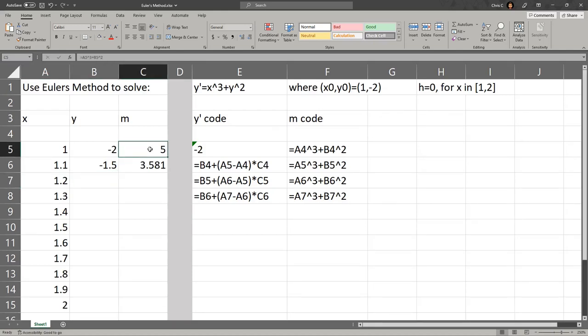All right, we saw the first slope computed right there. This next slope down, same formula, except instead of being in row 5, we're in row 6 now. So it's A6 cubed plus B6 squared. And make sure you get your equal sign at the front. I do have this formula typed out here so you can see it.